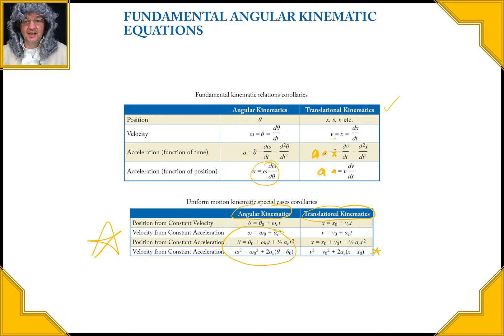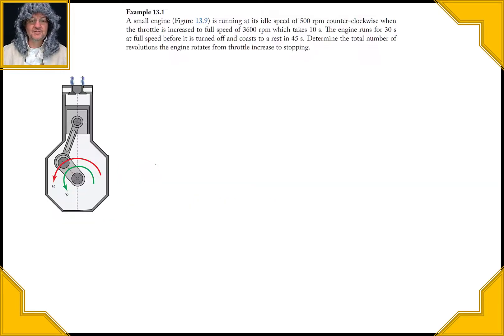So here's the example. We have the small engine and it's running at its idle speed of 500 RPM counterclockwise when the throttle is increased to bring it up to its full speed of 3600 RPM and that takes 10 seconds to happen, right. And we have to assume I think that it's going to be a constant increase in speed. The engine runs for 30 seconds at full speed before it is turned off and the thing coasts down, and it takes 45 seconds for it to coast down to get to zero. So we want to determine the total number of revolutions of the engine rotates from the throttle increase to its stopping, right.